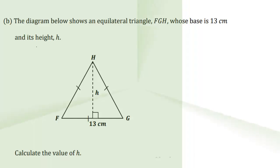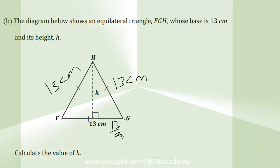Here we have part B of the question. The diagram shows an equilateral triangle FGH whose base is 13 centimeters and its height h. Calculate the value of h. Since this is an equilateral triangle, FG is 13, so FH will also be 13 centimeters. Similarly, HG is 13 centimeters. From this point to this point will be half of 13, which is 6.5 centimeters.